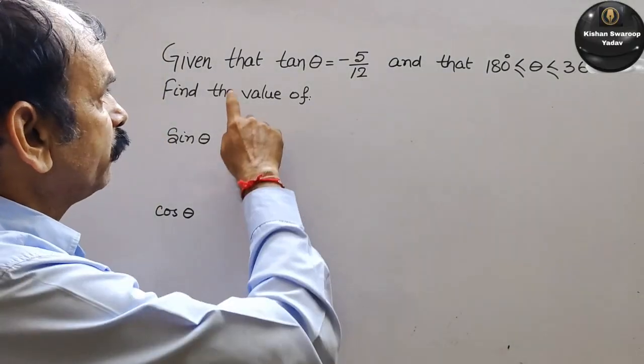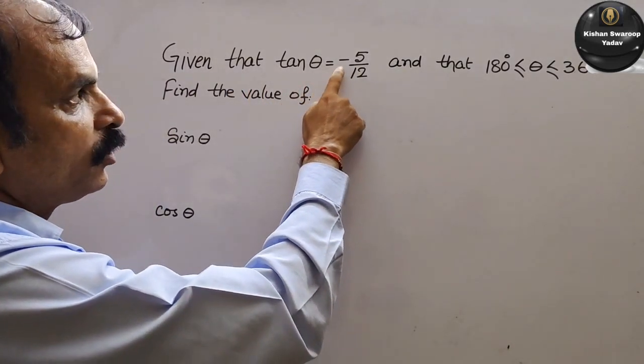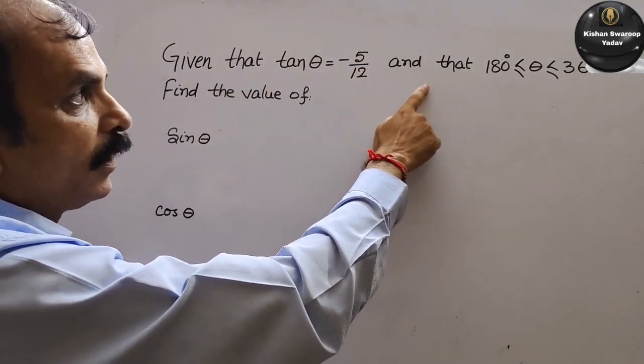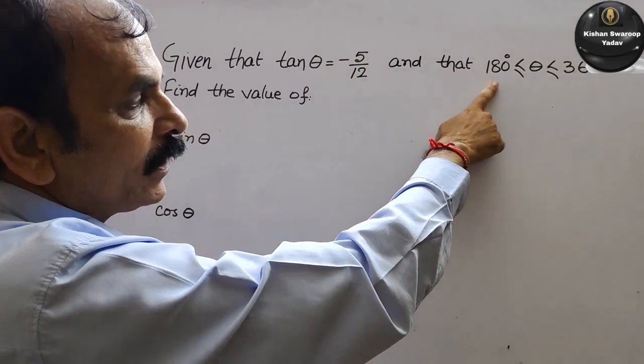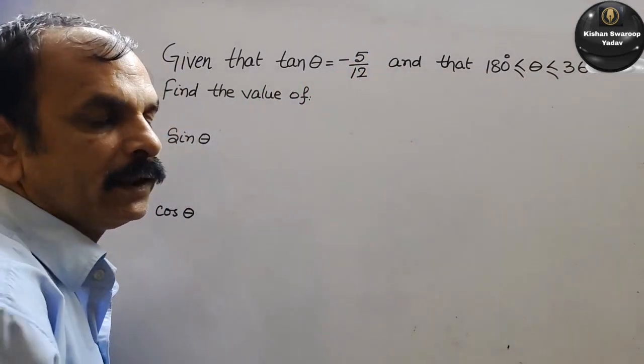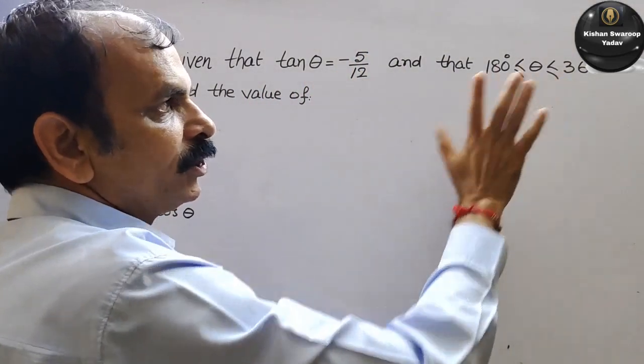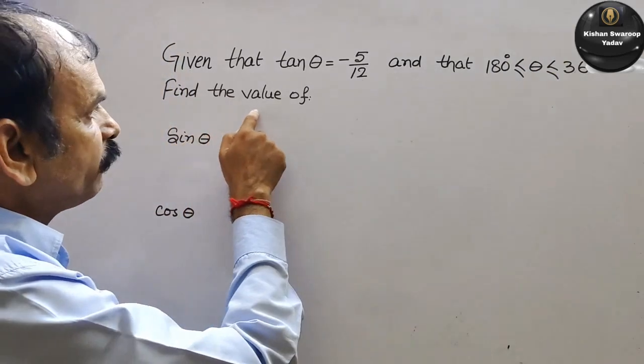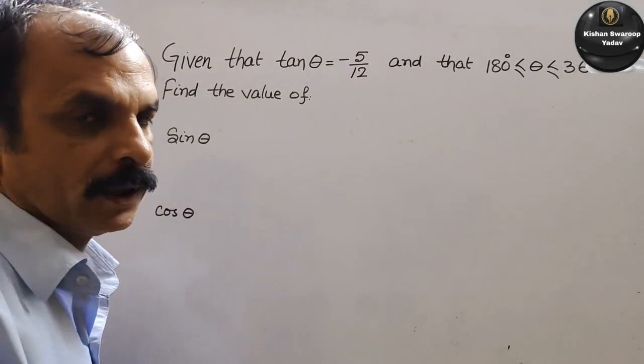Your question is given that tan theta is equal to minus 5 by 12 and that 180 degree less than equal to theta less than equal to 360 degree. Find the value of sine theta and cos theta.